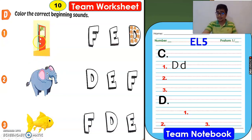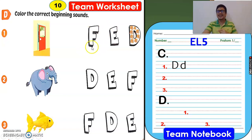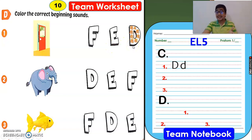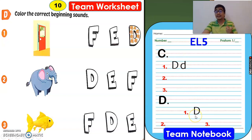So we have an example, number one. What is it? It's a door. Let's find the beginning letter or the beginning sound. Does it begin with letter F? Door — no, it's not letter F. How about letter E? Door — no, it's not letter E. How about letter D? D — yes! Please color letter D, any color you like. For letters E and F, don't color anything — only the correct letter. For the notebook, please write the correct answer: letter D. For numbers two and three, it's your turn.